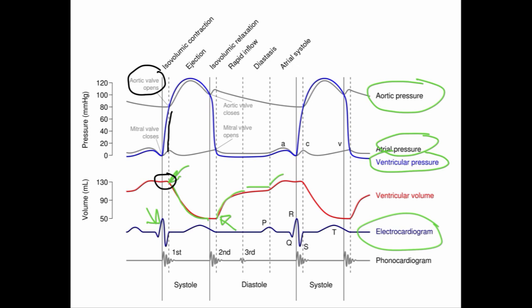Once the ventricular pressure goes down as systole comes to an end, the aortic pressure actually supersedes the ventricular pressure — again, gray versus blue — and this is when you have aortic valve closure. The blue curve continues to decline because now you have ventricular relaxation at the isovolumic stage, going down to where the left atrial pressure, also shown in gray, supersedes the ventricular pressure. This is when the mitral valve opens.